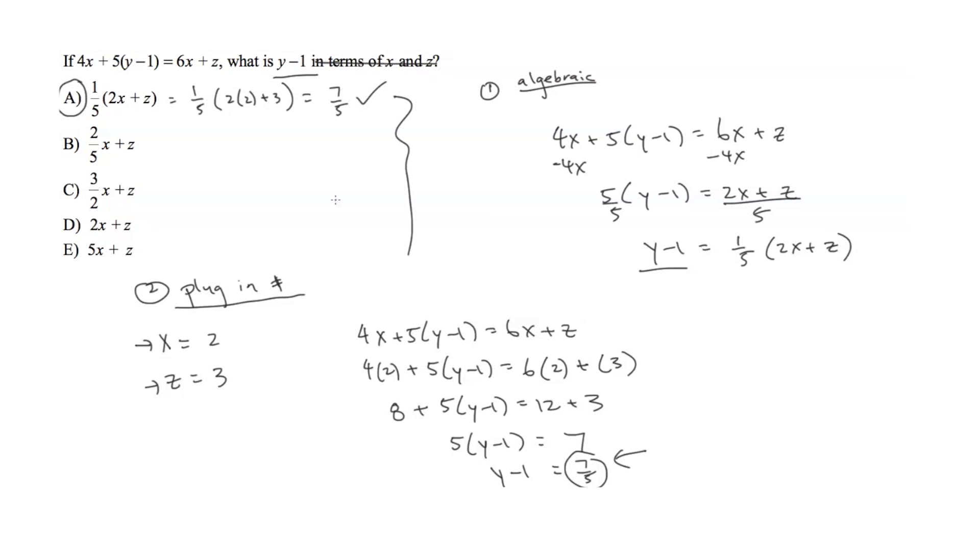So in this case, A might be true. And let's say you plug it into E and let's say E happens to equal 7 over 5 as well. What would you do next?